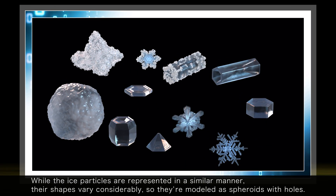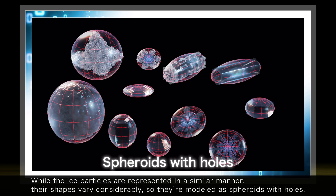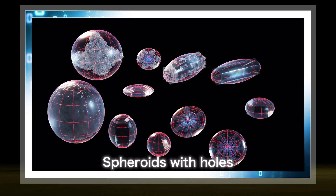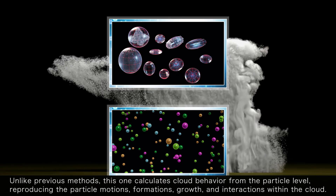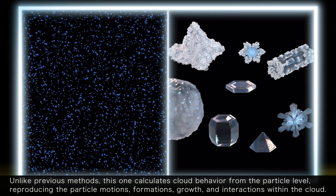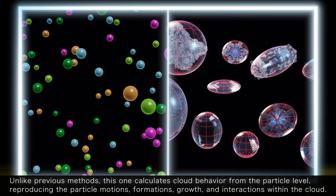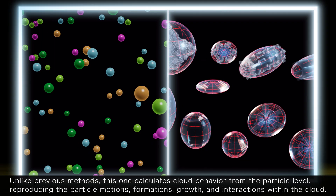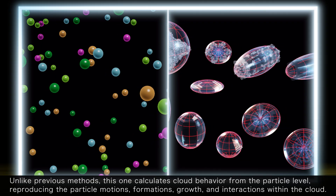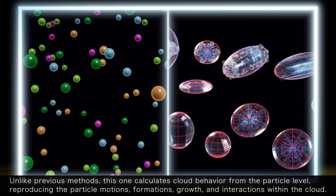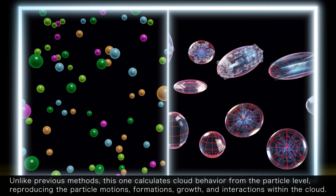While the ice particles are represented in a similar manner, their shapes vary considerably, so they're modeled as spheroids with holes. Unlike previous methods, this one calculates cloud behavior from the particle level, reproducing the particle motions, formations, growth, and interactions within the cloud.